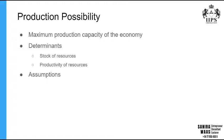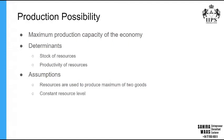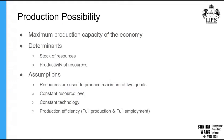When we derive the production possibility, we make five main assumptions. The first is that all resources available in the economy are used to produce a maximum of two goods. The second is a constant resource level — we assume the stock of resources won't change and will be held constant. The third is constant technology — the level of technology in the economy won't change and will be held constant.